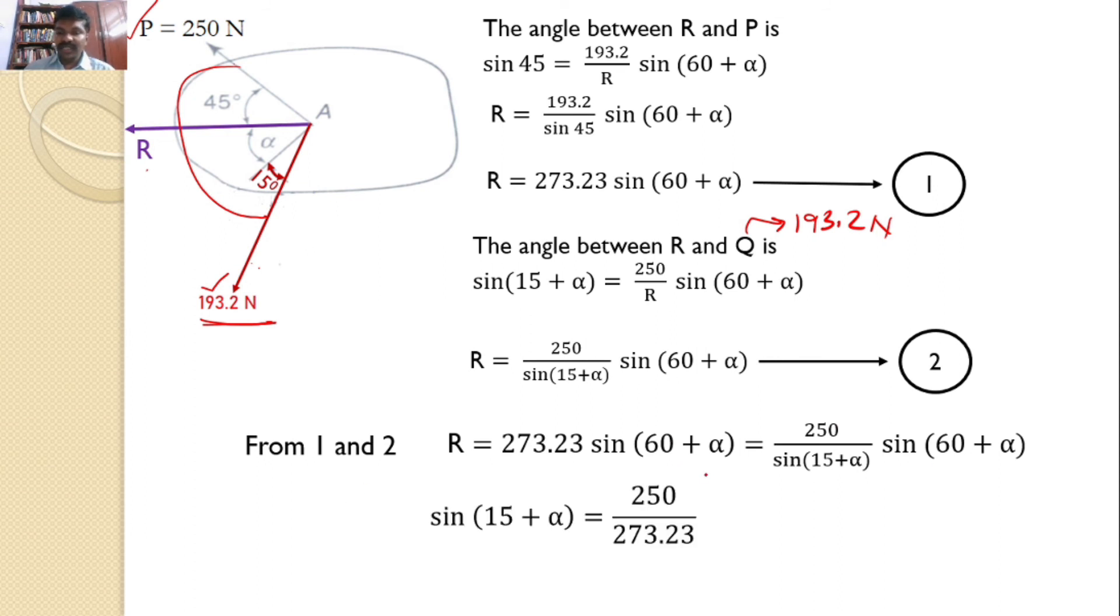So, sin 60 plus alpha gets canceling. Then I can get sin 15 plus alpha equals 250 by 273.23. That means sin 15 plus alpha equals 0.915.